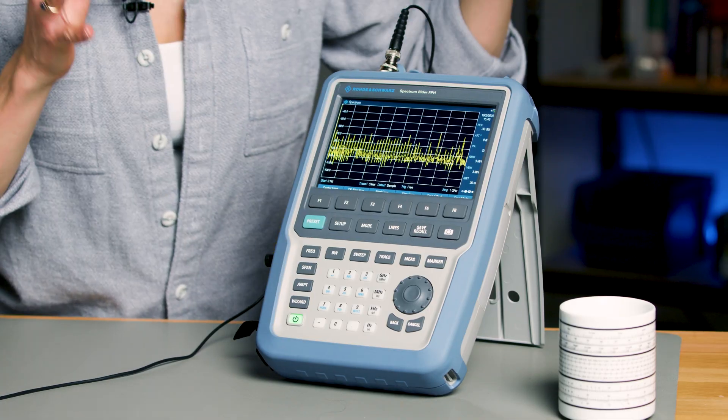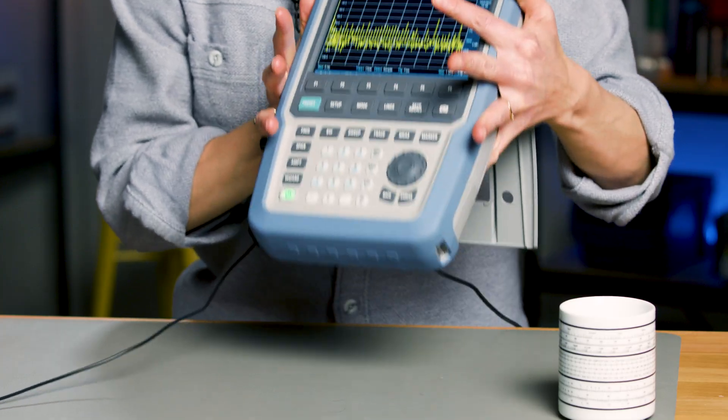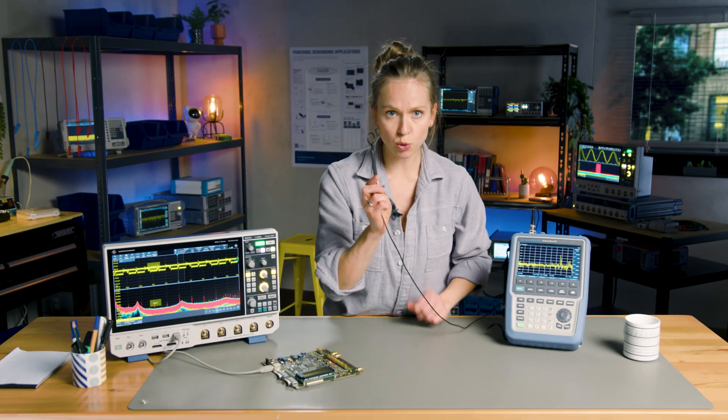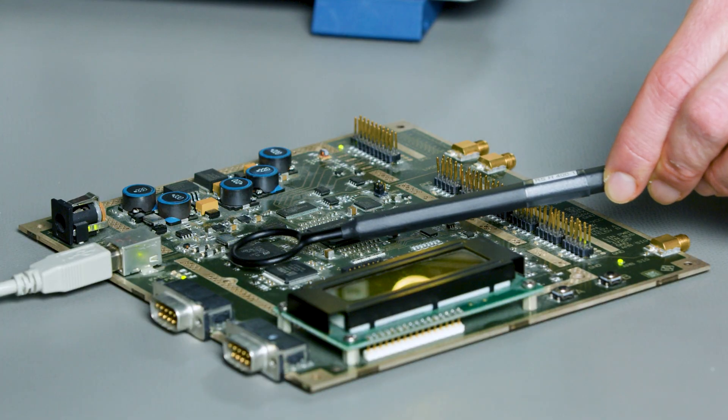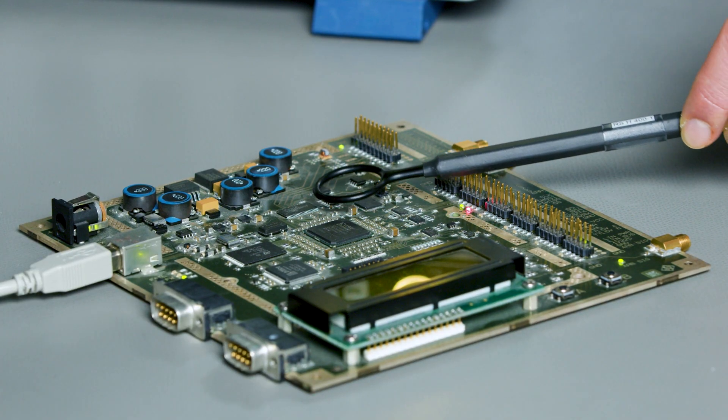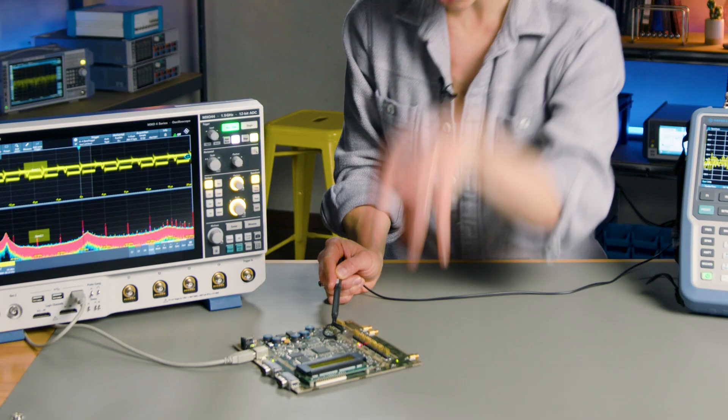For frequency domain analysis, the FPH handheld spectrum analyzer is perfect. It's lightweight, portable, and offers a wide frequency range to accurately capture EMI emissions. Using FPH, you can pinpoint problematic frequencies and identify whether the interference is coming from your design or from external sources.